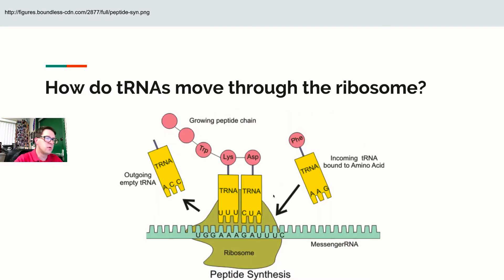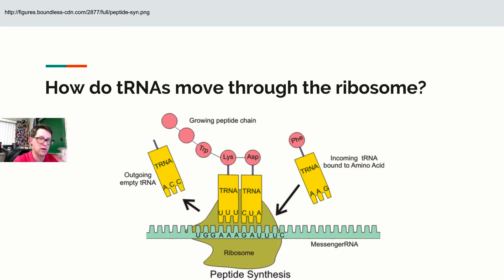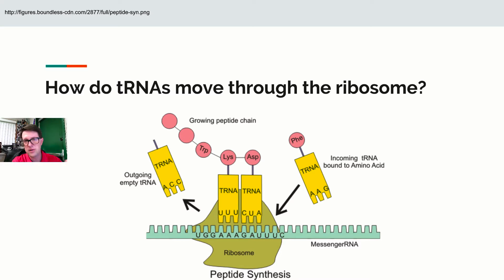A new tRNA comes in and binds to a codon at the A site. At the P site, the entire growing protein chain is transferred onto the amino acid at the A site, and then the entire structure shifts down one codon. The tRNA exits, a new tRNA is added to the A site, the peptide bond is made at the P site, everything shifts down again — and this repeats over and over.